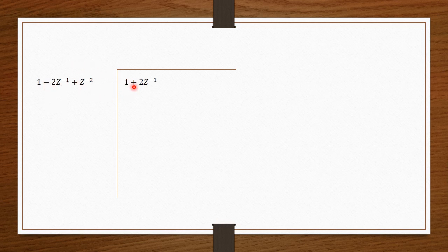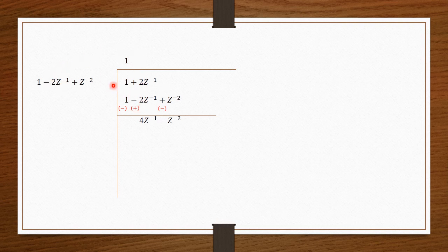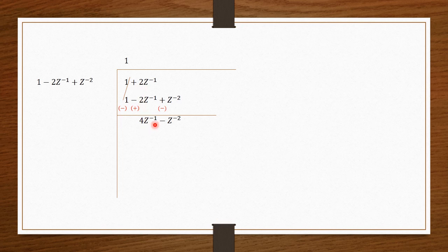Now performing the long division: numerator is 1 plus 2Z power minus 1, and denominator is 1 minus 2Z inverse plus Z power minus 2, both written starting from the constant. First we nullify 1 by multiplying by 1. So 1 into 1 is 1, then minus 2Z inverse, giving Z power minus 2. Changing the sign, 1 minus 1 cancels to 0, and we get 4Z inverse minus Z power minus 2 as the remainder.